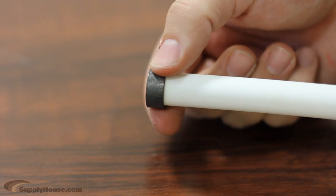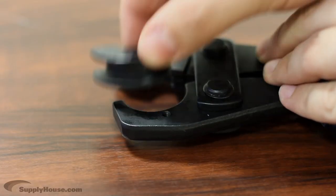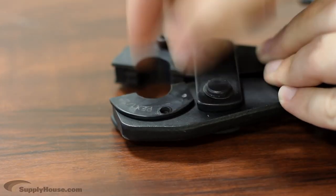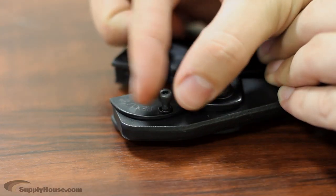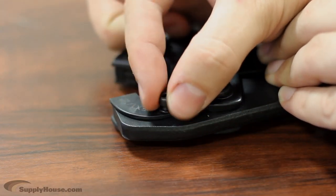Take the copper ring and slide it over the PEX tubing. Use the crimp tool head corresponding to the size of the fitting. For example, this tubing and coupling are half-inch, so you would need to use the half-inch tool.